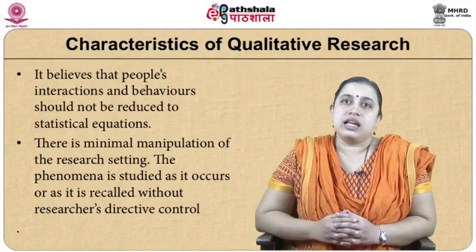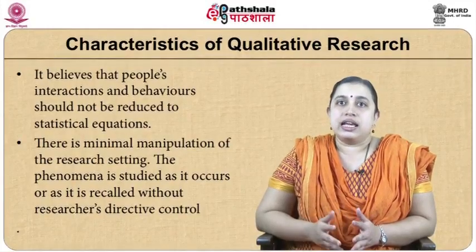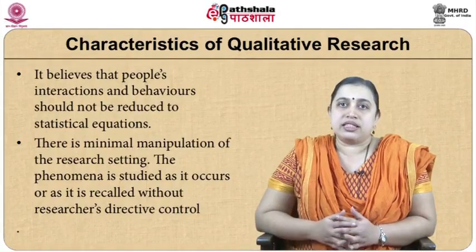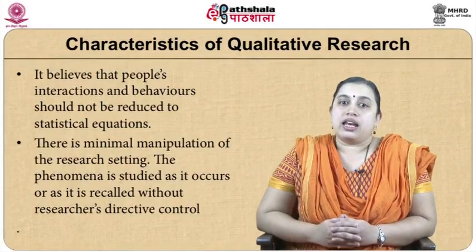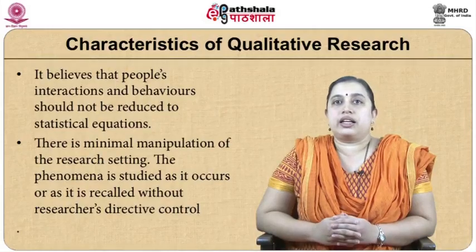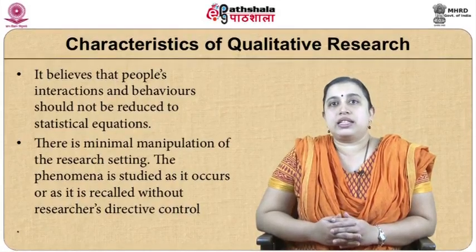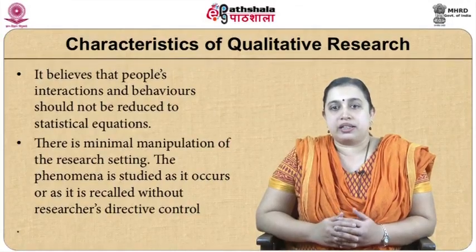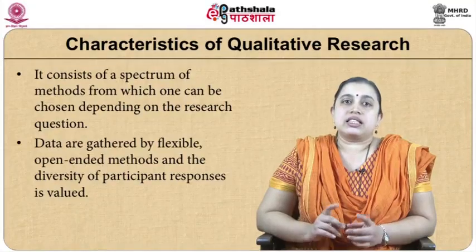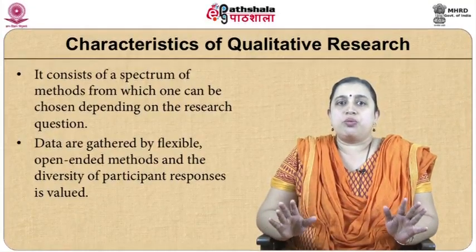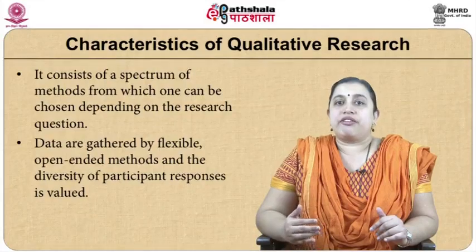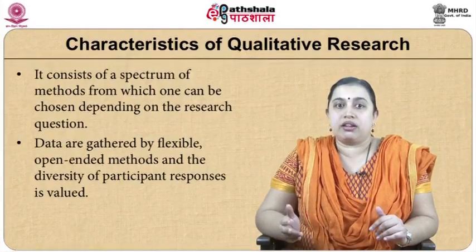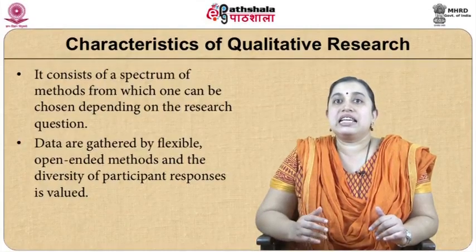Statistics, numbers, frequencies, and percentages are not the focus in qualitative research. What is focused on is the meanings and interpretations of behaviors and interactions. The fourth characteristic is there is minimal manipulation of the research setting — the phenomena is studied as it occurs and as it is recalled, without the researcher's directive control or manipulation of conditions as happens in an experimental study. The fifth characteristic is it consists of a spectrum of methods from which one can be chosen depending on the research topic. Sixth, data are gathered by flexible, open-ended questions and methods, and the diversity of participant responses is valued.